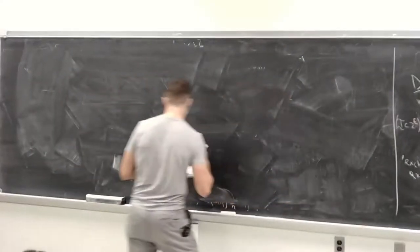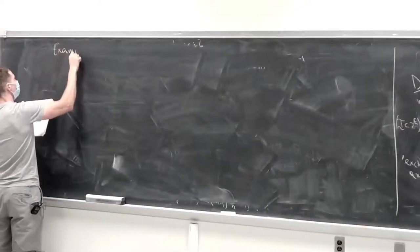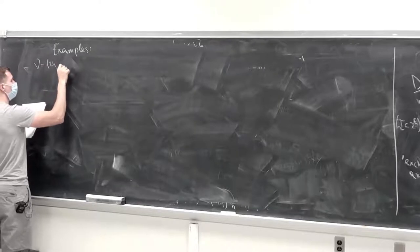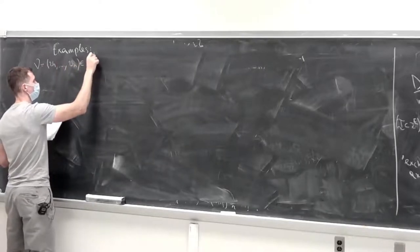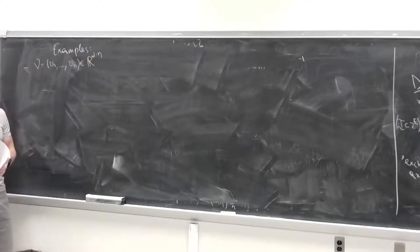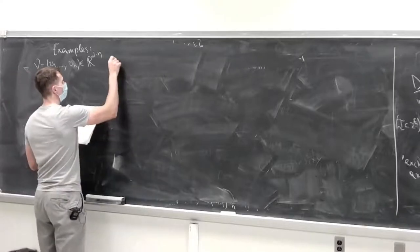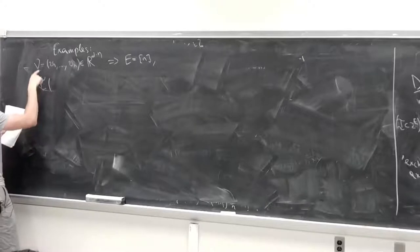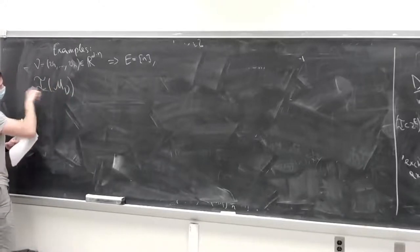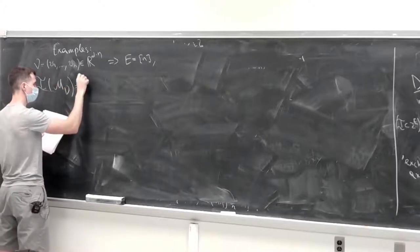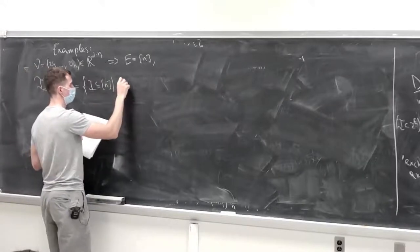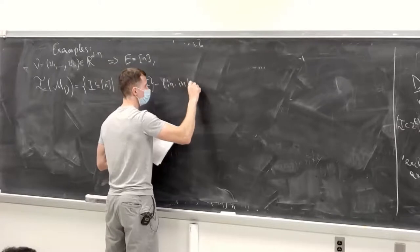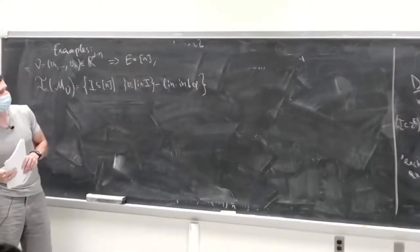Most of these examples you've already seen. The first is a vector configuration of N vectors in R^d. You set the ground set to be bracket N, and the matroid M_v has independent sets: subsets I of bracket N such that the vectors indexed by I are linearly independent. You can check the axioms from just linear algebra.